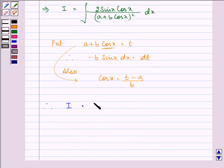I is equal to 2 integral t minus a upon b dt upon t square.